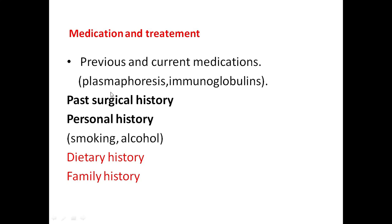In medication history, ask about use of any medication before the development of this weakness and about current medications being used by the patient, and whether there is any improvement after use of these medications. A patient may give you the clue that they have received plasmapheresis or immunoglobulins. Then ask about past surgical history and personal history like smoking and alcohol.